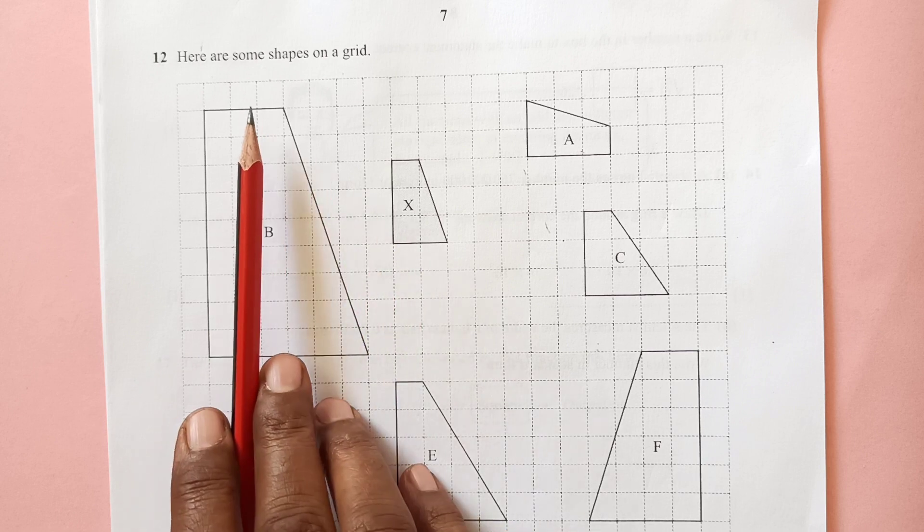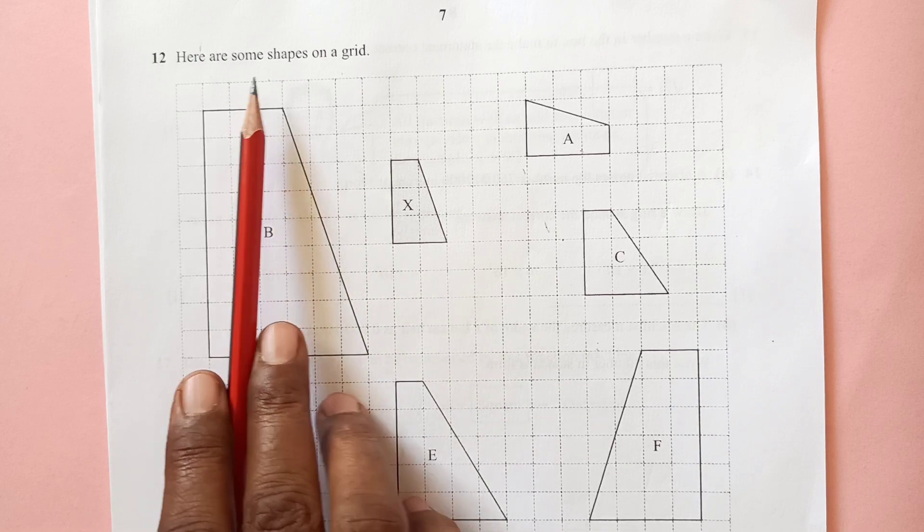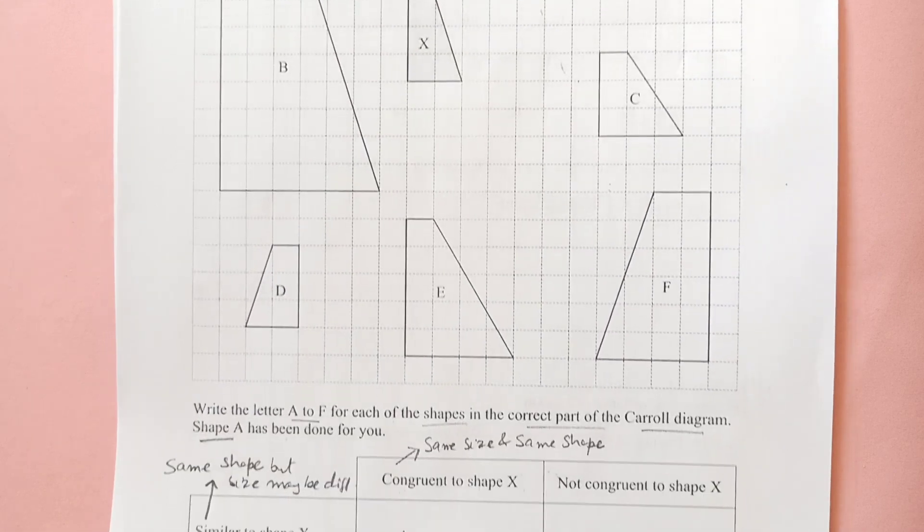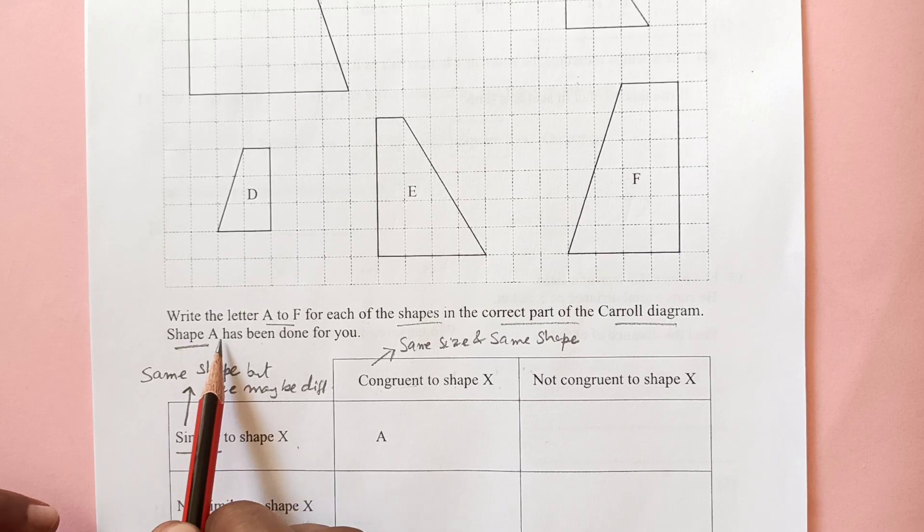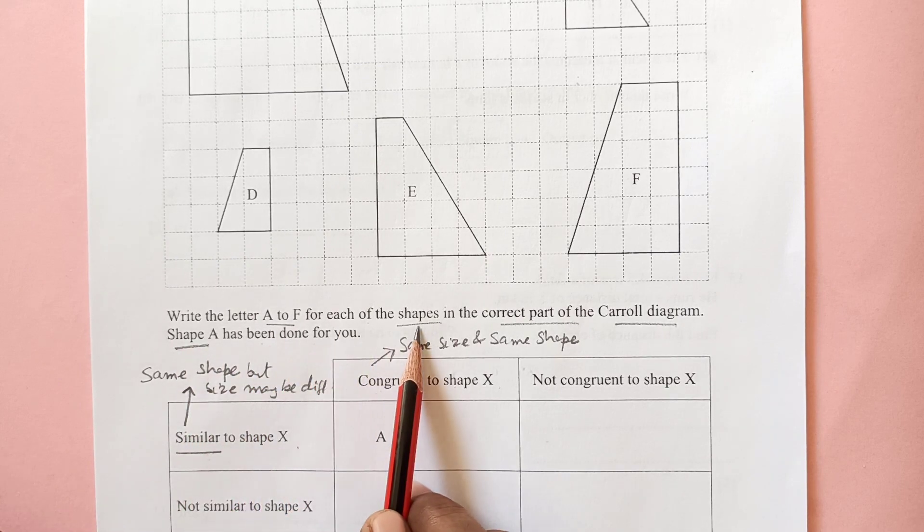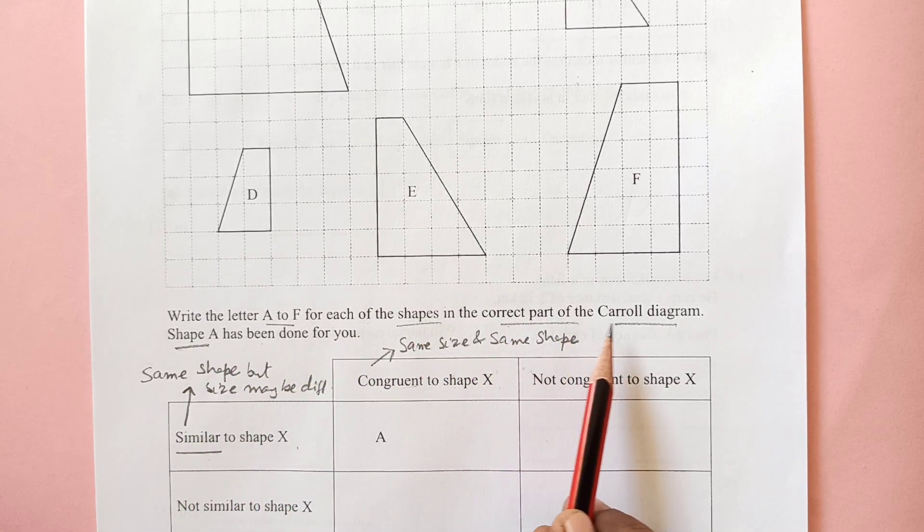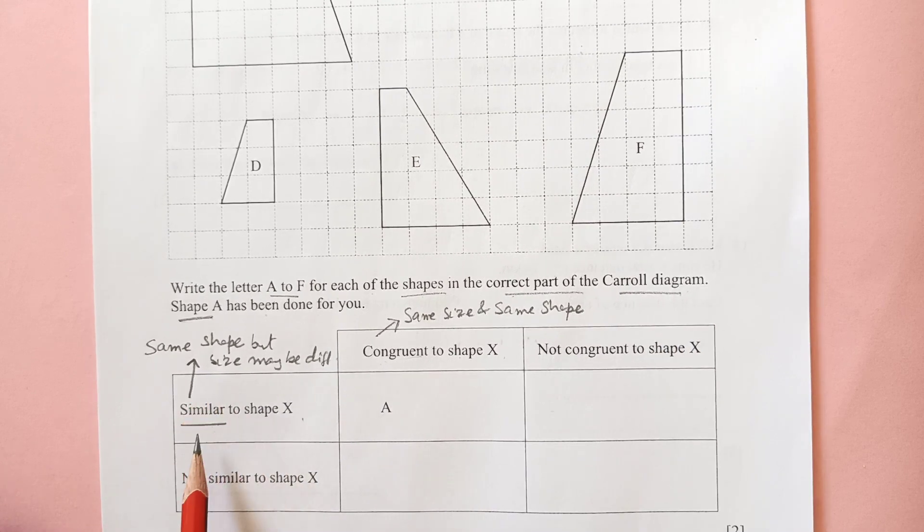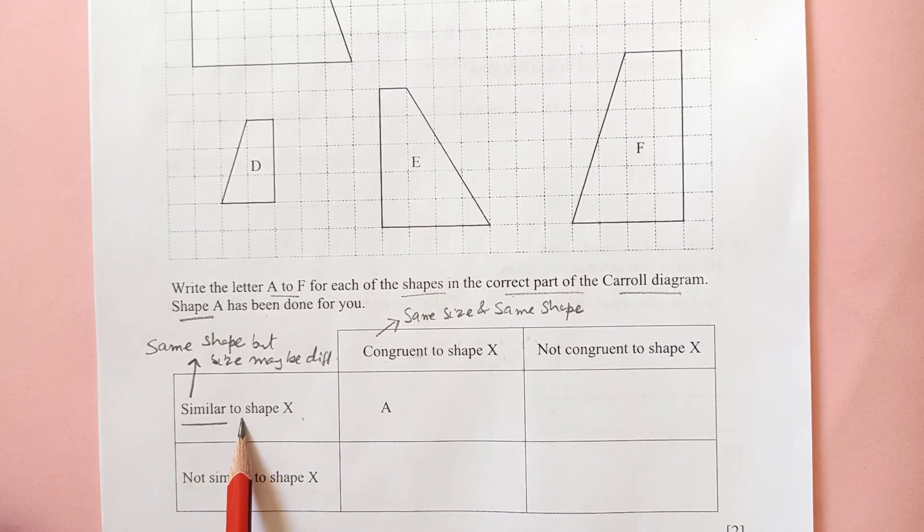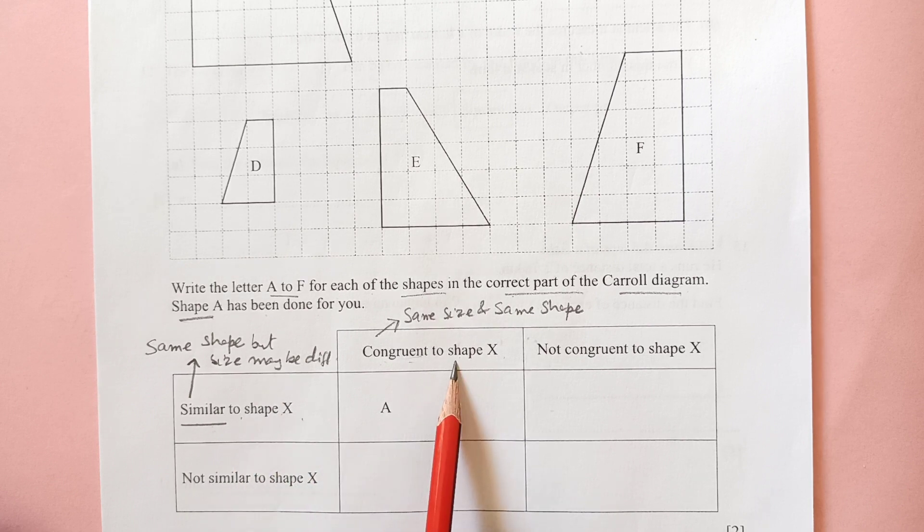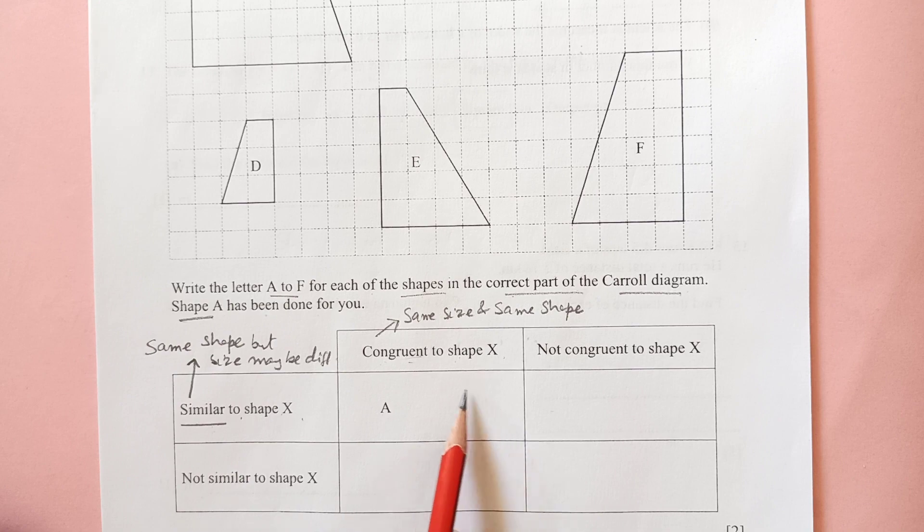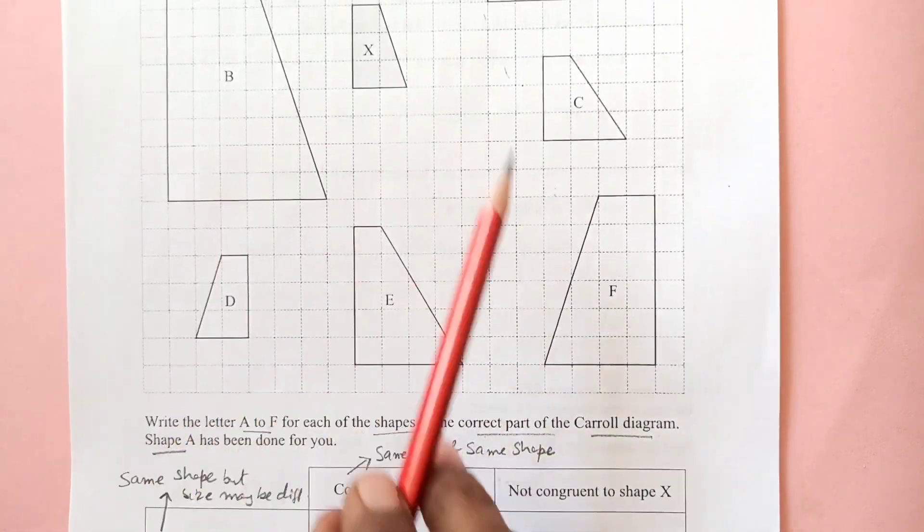Here are some shapes on the grid. You can see some shapes here. The question is, write the letter A to F for each of the shapes in the correct part of the Carroll diagram. So we have this Carroll diagram here with similar shape to X, congruent to shape X, not congruent to X, and not similar to X.